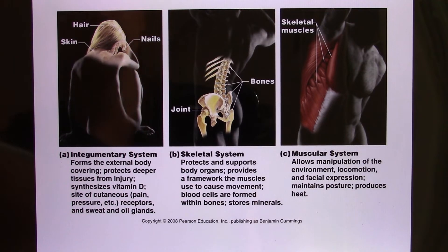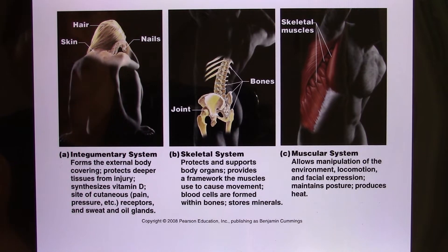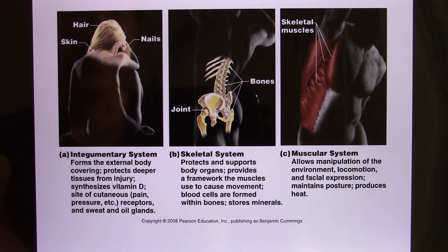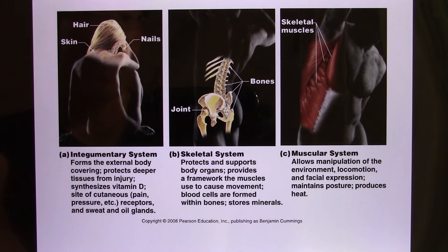The first system is the integumentary system — that's your skin. Skin is not just a thin layer; when you peel it open it's about 2 meters by 2 meters square and weighs about 4 kilograms. It's actually the biggest organ you have in your body and has a lot of functions.